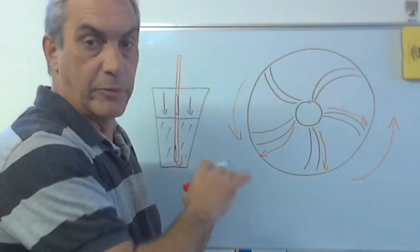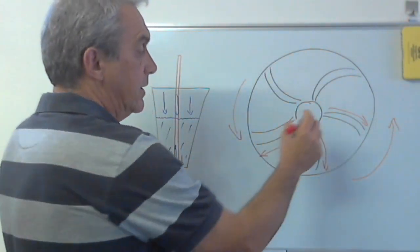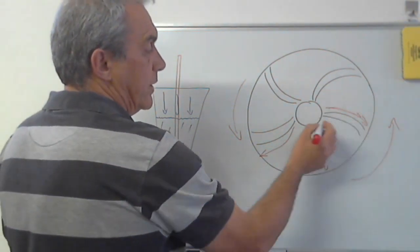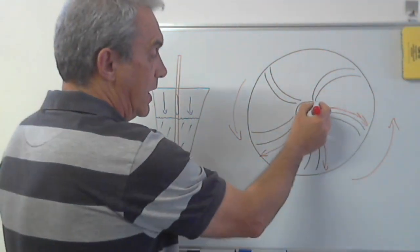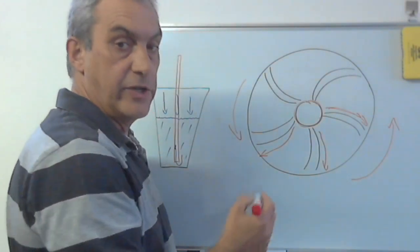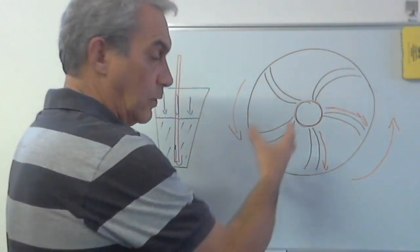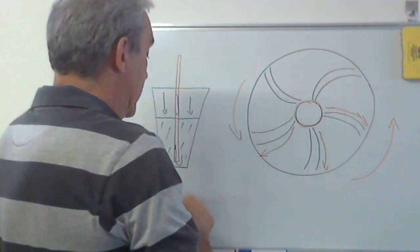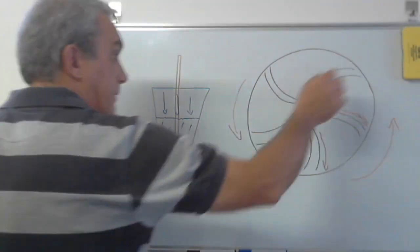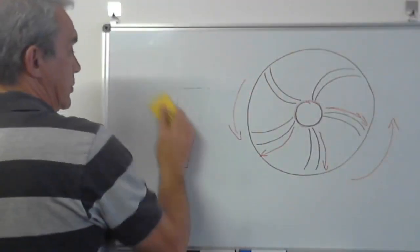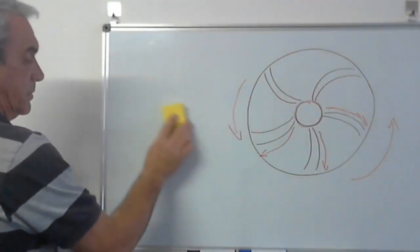But because this impeller was primed, completely filled with water and no air, the minute you move that water away, what are you doing behind it at the eye of the impeller? You're actually creating a vacuum, a low pressure zone. And if we draw a pump quickly, I'll show you in principle what's actually happening.